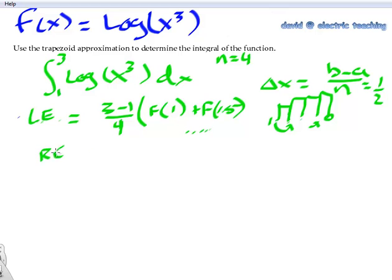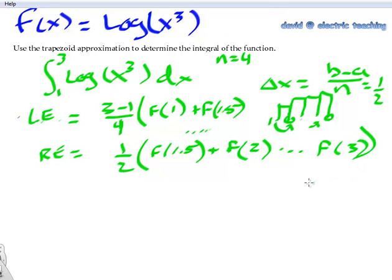Right end looks very similar. It's 1 half, but again 2 over 4 here, 1 half, f of not the starting point. We don't start with the left end, we start now 1 delta x over, so we're actually starting at 1.5. So we would plug in 1.5 into this function, and then add it with the plug of the next half over, 2, and then up to 2.5, and then the last one would be f of 3, the last end point. And that's what right end will look like.